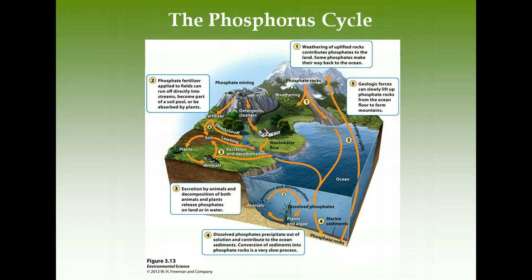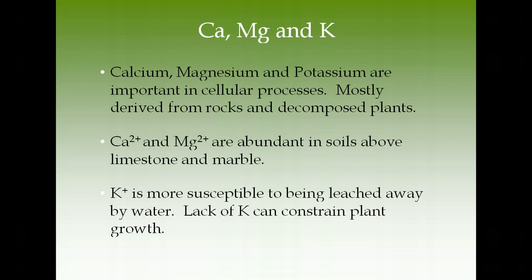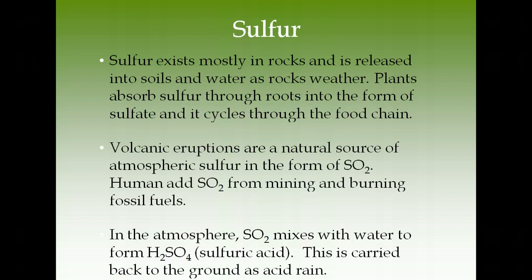Phosphorus enters the cycle naturally from weathering rocks and anthropogenically from fertilizers. You mainly need to know where it enters. Calcium, magnesium, and potassium are also important elements. Most come from rocks and decomposed plants. Potassium doesn't bind easily to soil, so it can be washed or leached away — we test for it when checking soil fertility. Calcium and magnesium are abundant in soils and are important minerals for plants.